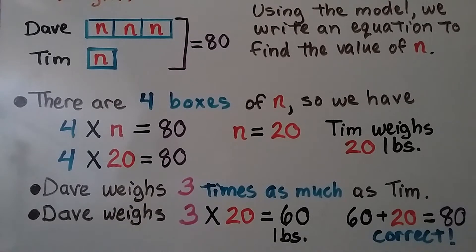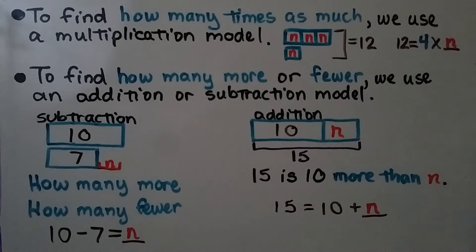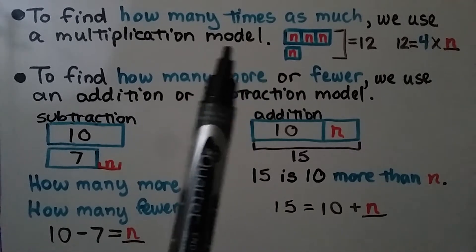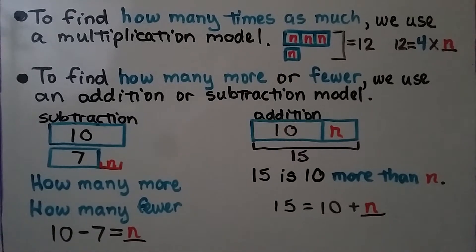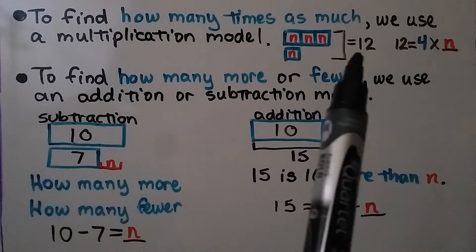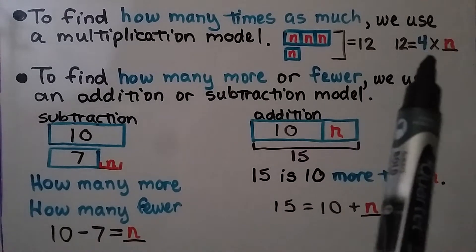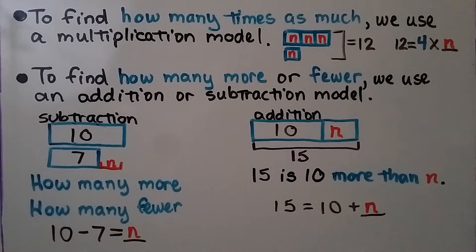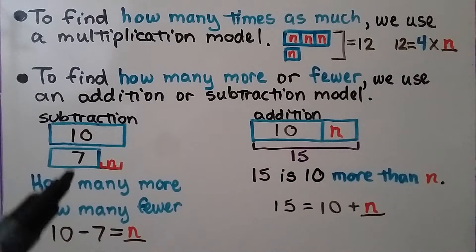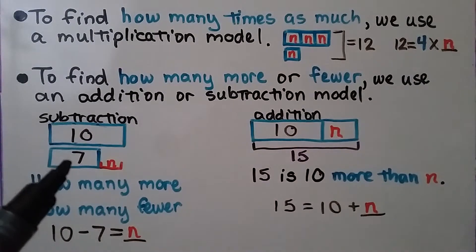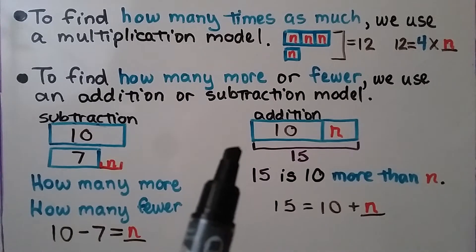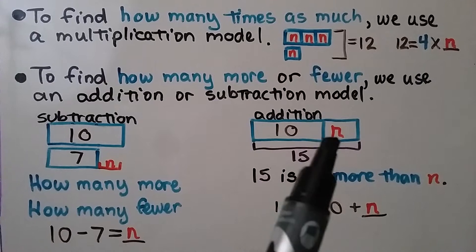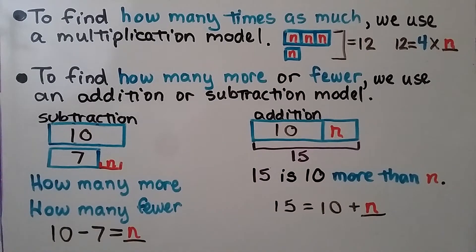To find how many times as much, we use a multiplication model. However many times as much tells us how many boxes are in the top bar, compared to one n box below. Together there are four boxes — if they all equal 12, then 12 equals four times n. To find how many more or fewer, we use an addition or subtraction model. For addition: '15 is 10 more than n' — the whole is 15, we have 10, and 15 equals 10 plus n.